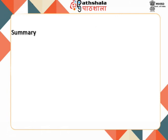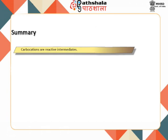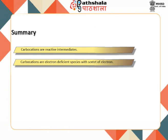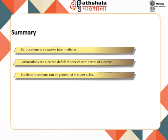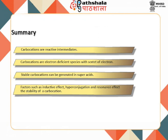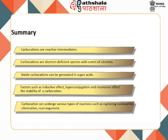Let us now summarize what we have learnt in this module. We studied that carbocations are reactive intermediates and electron deficient species with a sextet of electrons. Stable carbocations can be generated in super acids. Factors such as inductive effect, hyperconjugation, and resonance affect the stability of a carbocation. Carbocations can undergo various types of reactions such as capturing a nucleophile, elimination, and rearrangement.